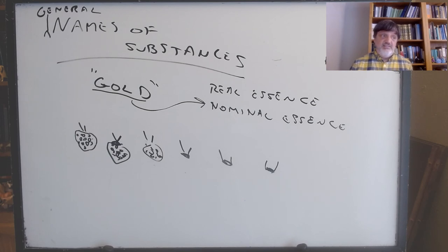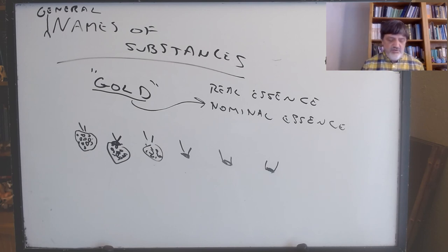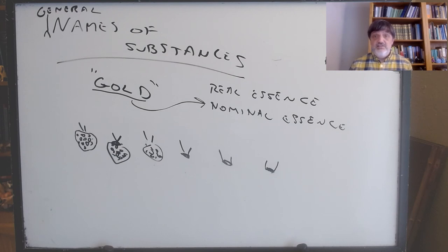Locke thinks there is something to worry about in that case and talks about it in Book 4. But if we think what we're worrying about is whether the real essence of human beings is found in them or not, we misunderstand the situation. It's up to us to decide what the essence is, and that also means we're responsible for our decision about what the essence is, if that has certain consequences.